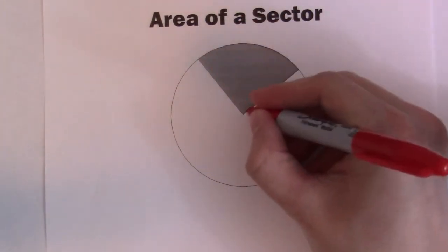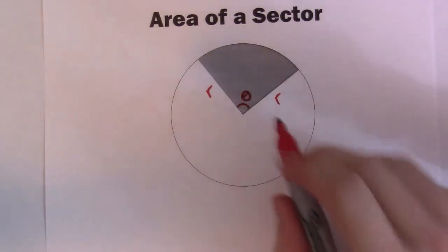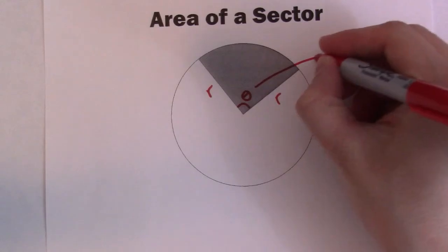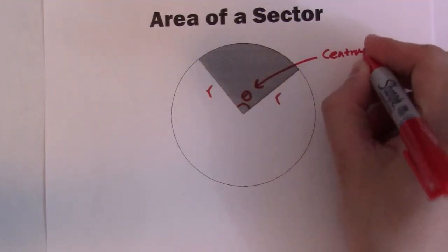Basically you have two radii here, and then in between them you have this theta. This theta is what's called the central angle.